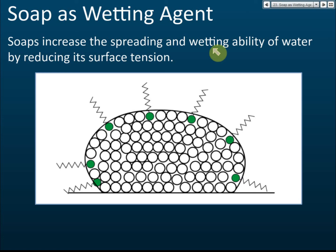Soap as a wetting agent. To understand soap as a wetting agent, you need to know what surface tension means. Let's look at a drop of water on a surface that we want to wash. Inside water there are a lot of water molecules, and between these water molecules there is an attraction force — quite strong. These molecules pull each other, and this causes surface tension on the surface of the water.